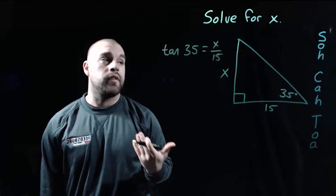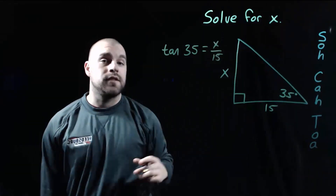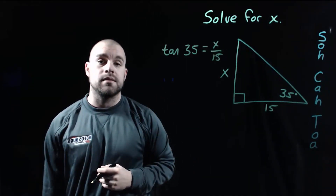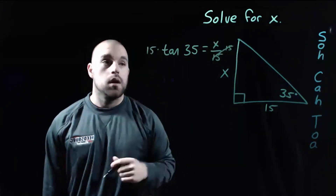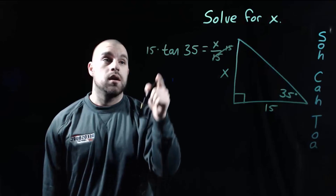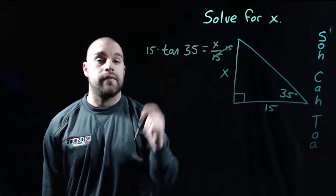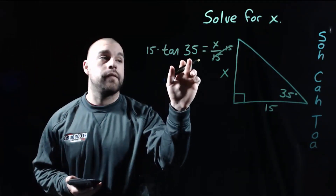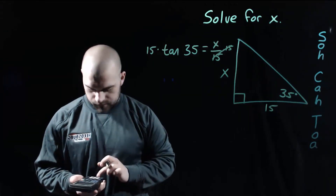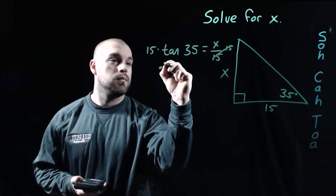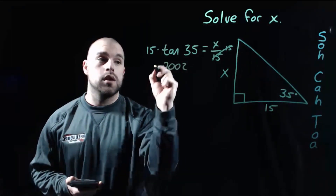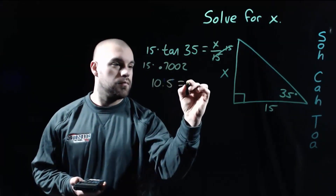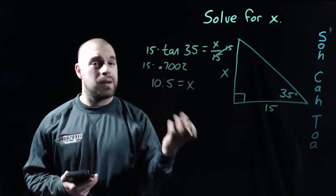Now we need to start solving to get X all by itself. Right now X is being divided by 15, so if we think inverse operations from algebra, we multiply both sides by 15. Now we've got X all by itself on the right-hand side. On the left-hand side we've got 15 times the tangent of 35. In my calculator, tangent of 35 degrees is 0.7002. Times 15, rounding to one decimal place, we get about 10.5.